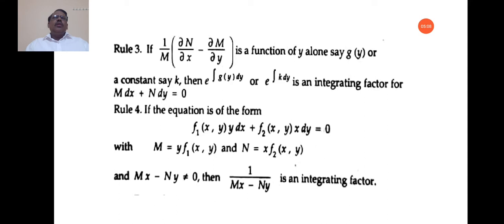Rule 3: If (1/M)(∂N/∂x − ∂M/∂y) is a function of y alone, say g(y), or a constant, then e to the power of integral of g(y)dy is an integrating factor for Mdx + Ndy = 0. Multiply the given equation by this factor and the equation reduces to an exact differential equation.